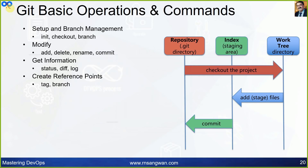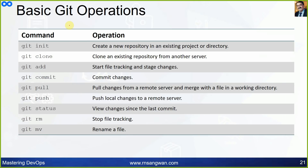Basic operations and commands: for setup and branch management, use init, checkout, and branch. For modifying, use add, delete, rename, and commit. For information, use status, diff, and log. For reference points, use tag and branch. The first command is 'git init' — this creates a new repository in an existing project or directory.